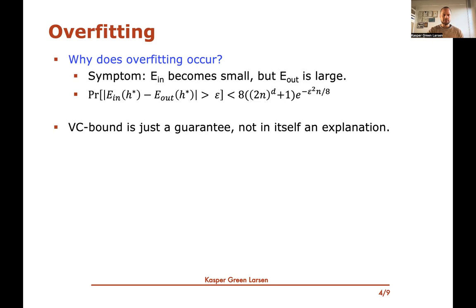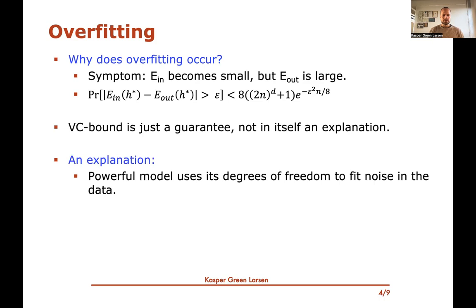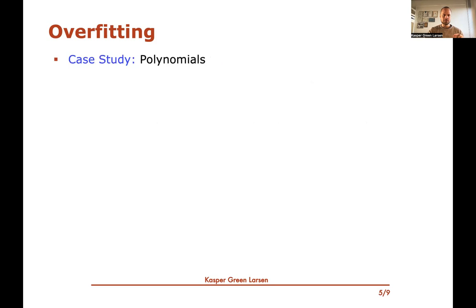Let's try to look for an explanation. One commonly accepted explanation is that if I have a very powerful model — one that's too complicated, or has too many parameters to tune — then it has a lot of degrees of freedom that I can turn. What it's doing is using these degrees of freedom to fit noise in the data. So to actually visualize this, we're going to look at polynomials.